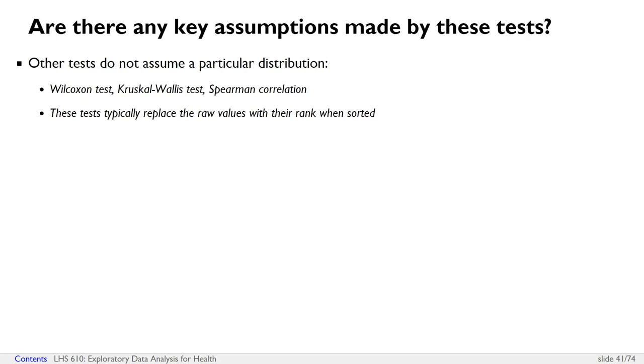These tests, what they typically do is they replace the raw values with the rank when they get sorted. You're actually comparing the ranks of the values rather than the raw values themselves. Even if there's major skewness to the data, when you convert each of the points into a rank from one to, let's say, 10,000, where one is the lowest value and 10,000 is the highest value, any of those magnitudes of difference get lost. These tests are a way to compare those ranks.